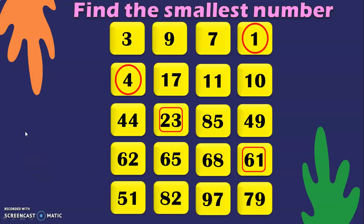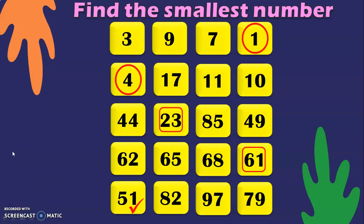We are given numbers 51, 82, 97, and 79. First, compare the tens place. The tens digits are 5, 8, 9, and 7. Since these are all different, 5 is the smallest. With that, we can conclude that 51 is the smallest number in this series. You could also ask children to put a tick against the smallest number. I hope you are clear with how to identify the smallest number in a series.